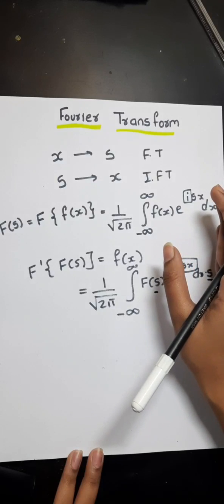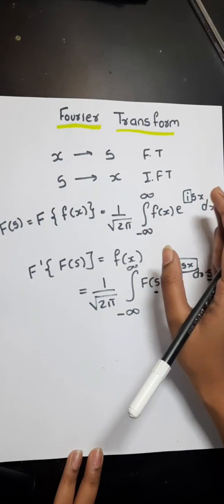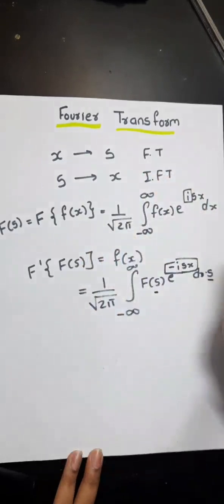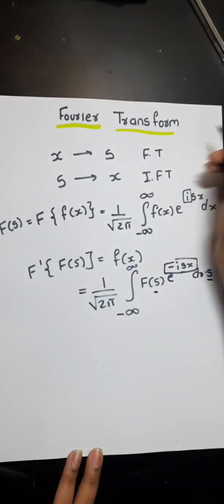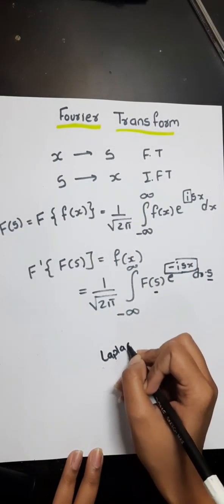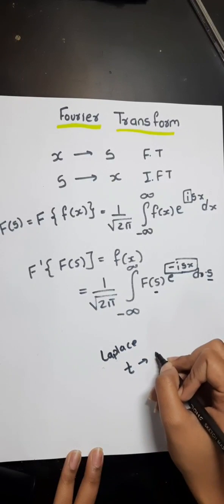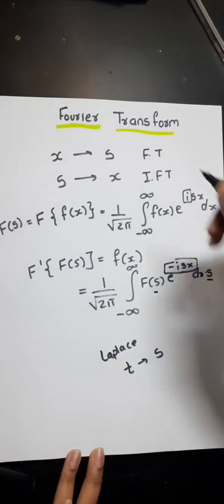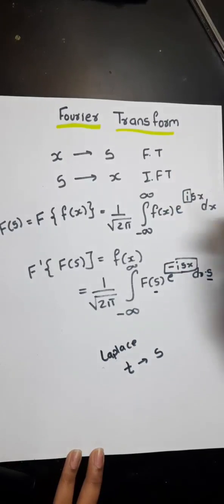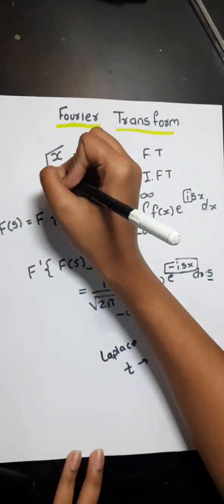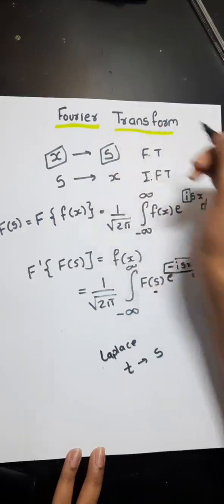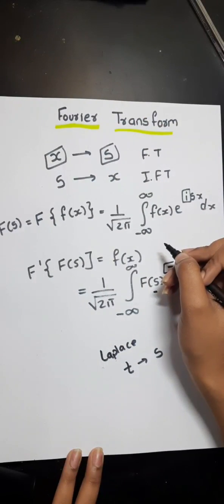Fourier transform just like any other transformation changes from one scale to another scale. You have seen in Laplace transform, we were changing from a time scale to frequency scale. Over here in Fourier transform we are changing from x scale to s scale. We are doing this for our convenience.